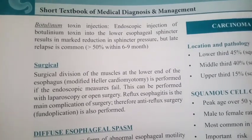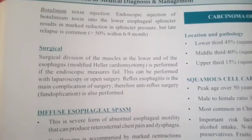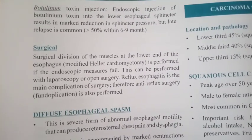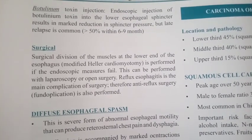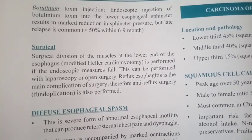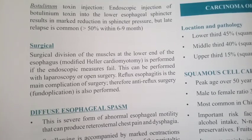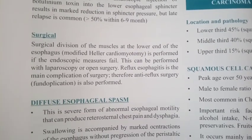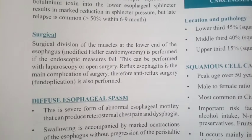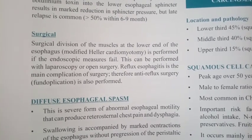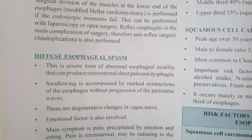However, late relapse is common. Surgical division of the muscles at the lower end of the esophagus — modified Heller's cardiomyotomy — is preferred if endoscopic measures fail. This can be performed with laparoscopy or open surgery. Reflux esophagitis is the main complication of surgery; therefore anti-reflux surgery, fundoplication, is also performed.